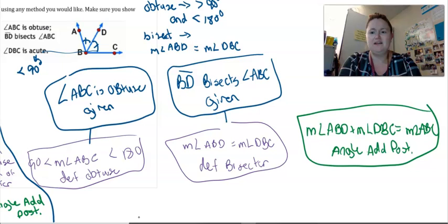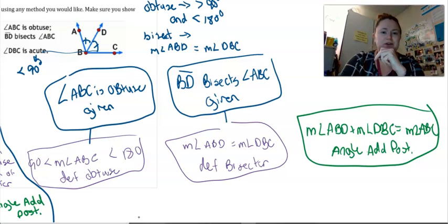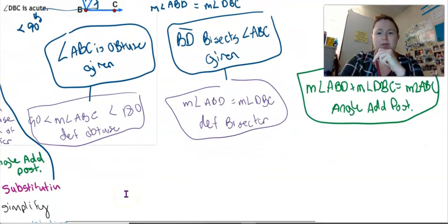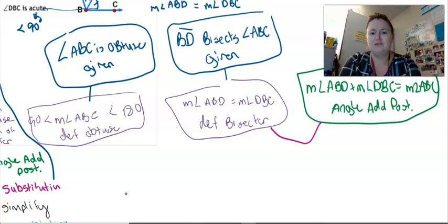So then I need to think about, well, I'm trying to get angle DBC. I really don't need to talk about angle ABD if I'm trying to prove something about DBC. So the next thing I probably ought to do is use substitution so that with these two pieces of information, I only need to talk about DBC.